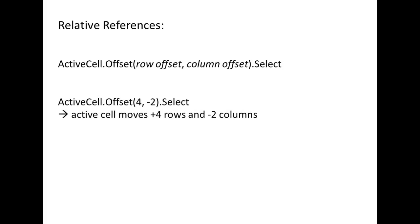Here is an example of using ActiveCell.Offset.Select. This will move the active cell four rows down and two columns to the left from the current location of the active cell. Notice that when using relative references, the new location of the active cell will be dependent upon the current location of the active cell.